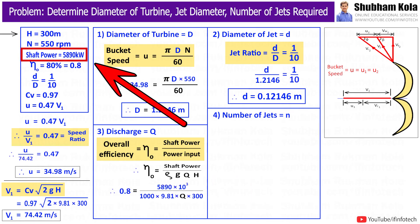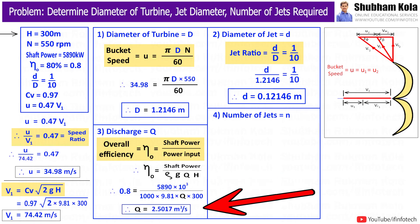Shaft power is provided in problem. Therefore, by putting all these values, we will calculate discharge Q as 2.5017 meter cube per second.